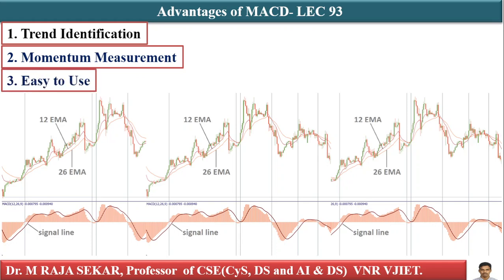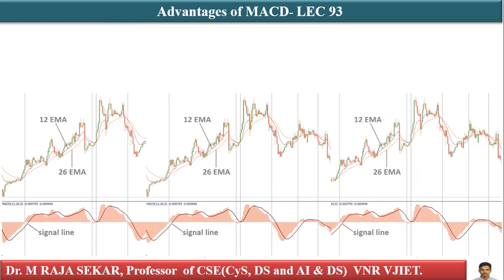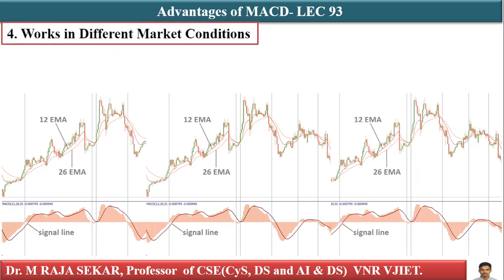Third, MACD is visually simple and easy to interpret, even for beginner traders. It consists of only three components: the MACD line, the signal line, and the histogram. Fourth, it works in different market conditions — effective for spotting trend reversals in trending markets, and can also be used in sideways markets to identify potential breakout points.